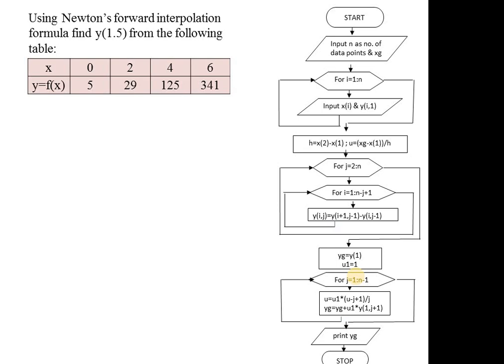At the start we input N and the XG value — the value at which we need to calculate Y. Then we input all data points for X and Y variables using a for loop from 1 to N, because MATLAB arrays do not recognize X(0), so indexing starts from 1. After inputting the data, we calculate the X value, U value, and then prepare the forward difference equation.